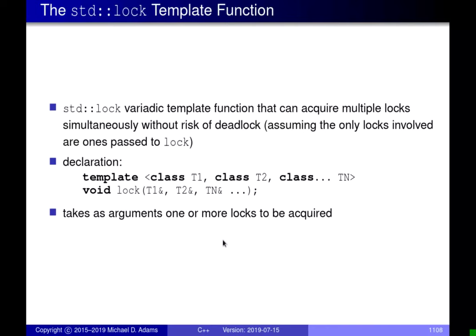In the last lecture, we were talking about mutexes, looking at the mutex type in the standard library, and also some RAII classes like unique_lock and scope_lock. There's a variadic function called lock — meaning it takes multiple parameters — and you can give it an arbitrary number of locks. It applies a deadlock avoidance algorithm to make sure the locks are locked in a consistently ordered way.